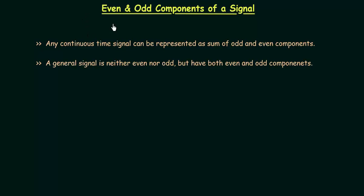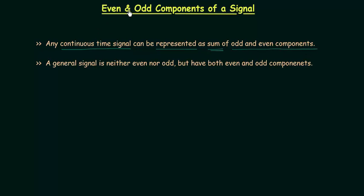In this lecture we will find even and odd components of a signal. Any continuous time signal can be represented as a sum of odd and even components. A general signal is neither even nor odd, but has both even and odd components.